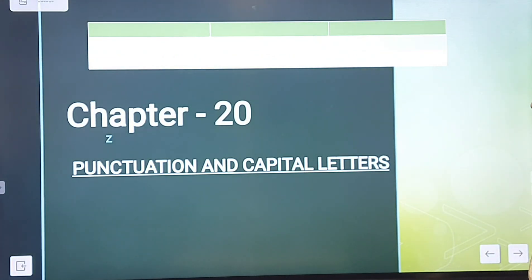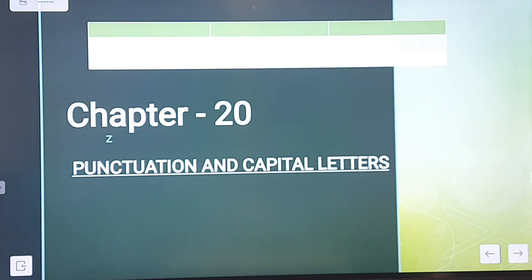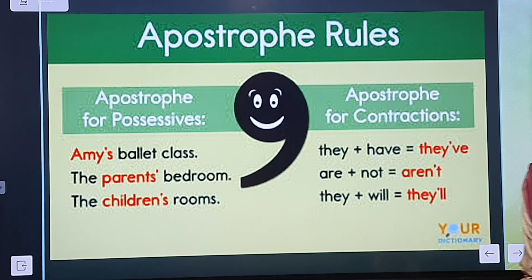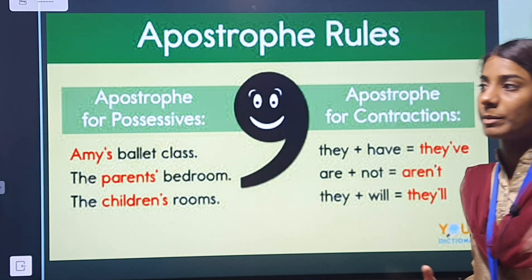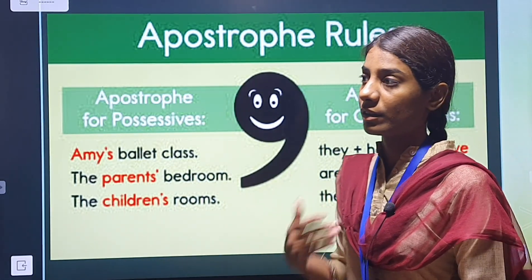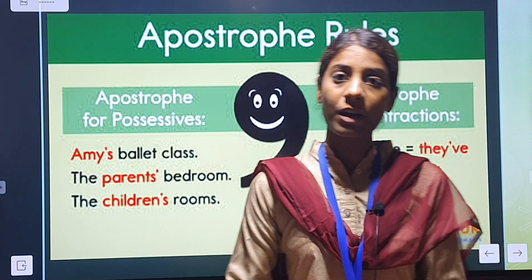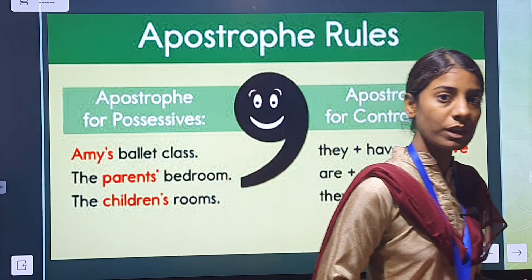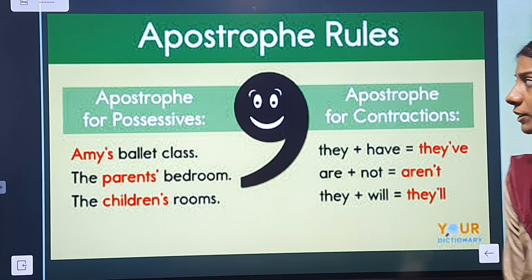So today we will continue with punctuation and capital letters. We will begin today with the apostrophe, and we will also cover the hyphen, the comma, quotation marks, colon, and semicolon.